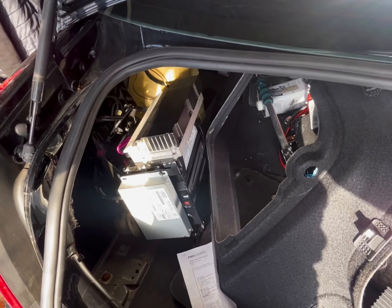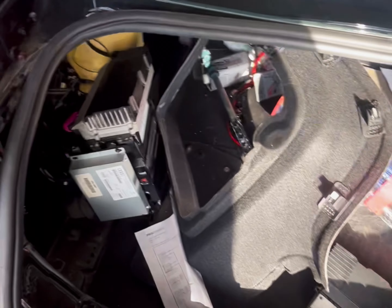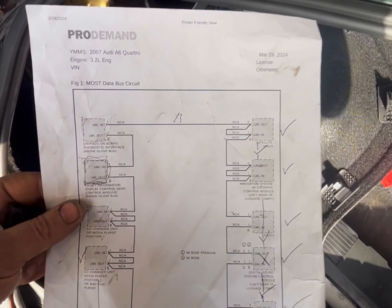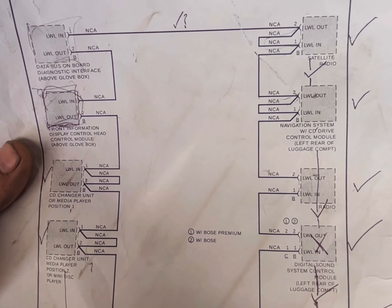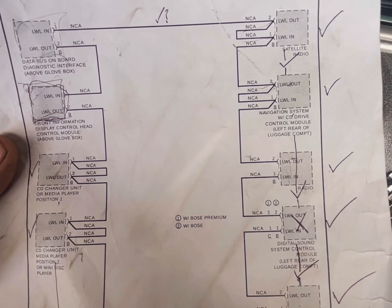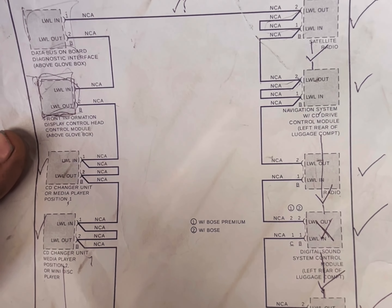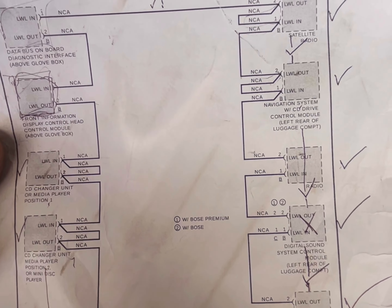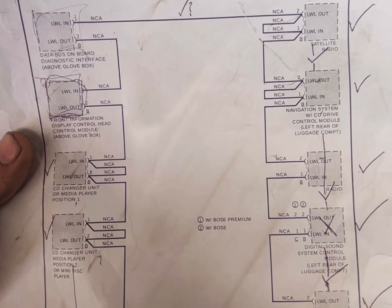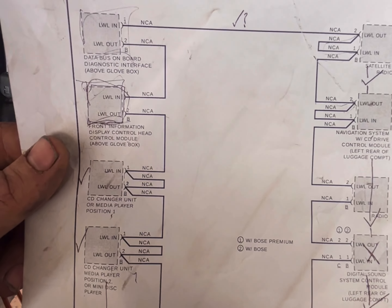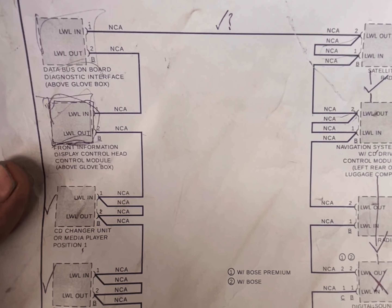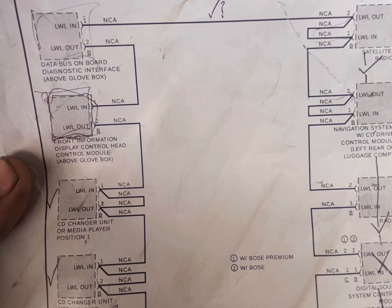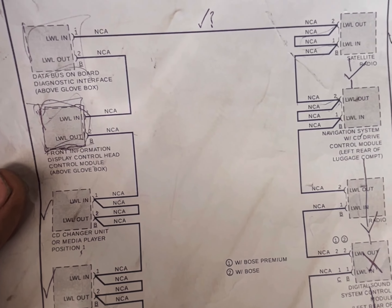I'll show you a full diagnostic — if you're having an issue with one of these modules, I'll show you what you have to do. I'll go over every module in the system: you have the satellite radio, the navigation, the radio digital sound control module which is the amp, and the telephone transceiver on the right side of the system. On the left side you have the data bus on-board diagnostic interface and the front information display control head.